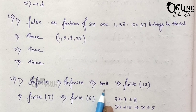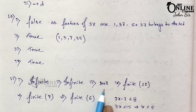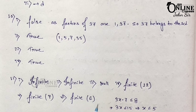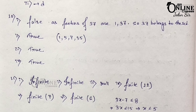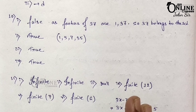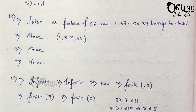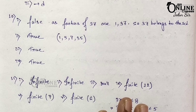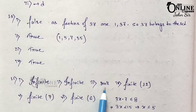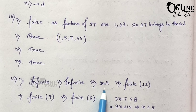Number 3: x is an even prime number greater than 2. The only even prime number is 2. There is no even prime number greater than 2. So it's a null set.